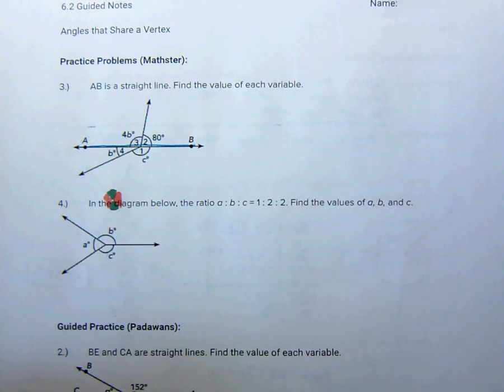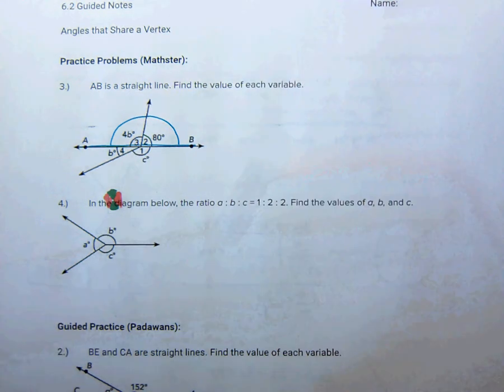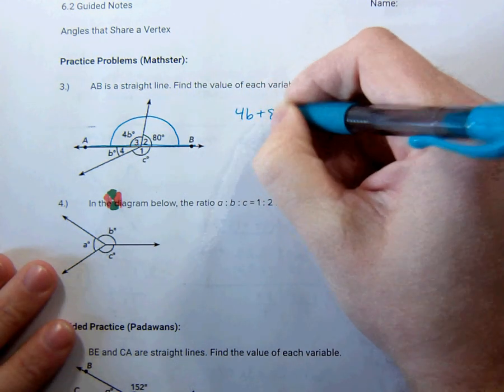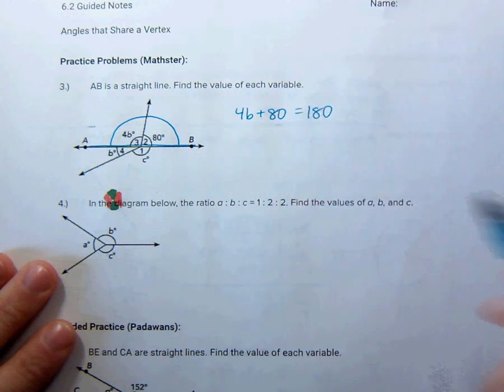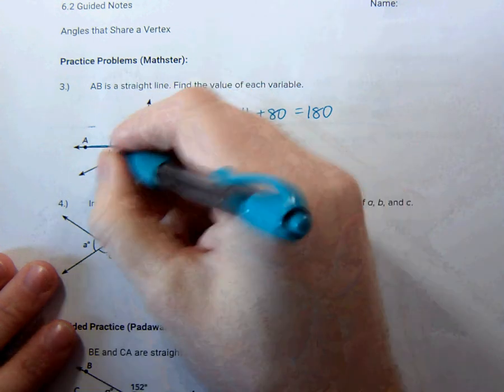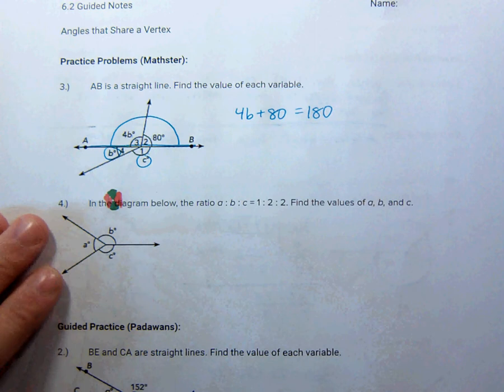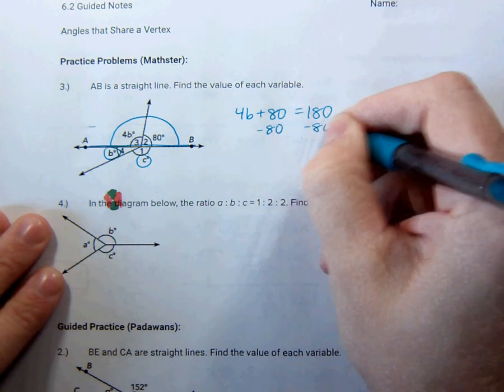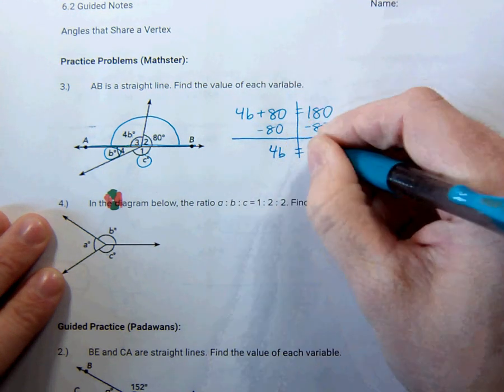A, B is a straight line. It's something you have to consider. What they're trying to say is A, B makes 180 degrees. If you hear something that's a straight line, it makes 180 degrees. That means this right here is 180 degrees. So 4b plus 80 is 180 degrees. And that's going to help us. We want to find the value of each variable. Now there's a variable that's b, there's another one there, and c. So we need to find b and c.